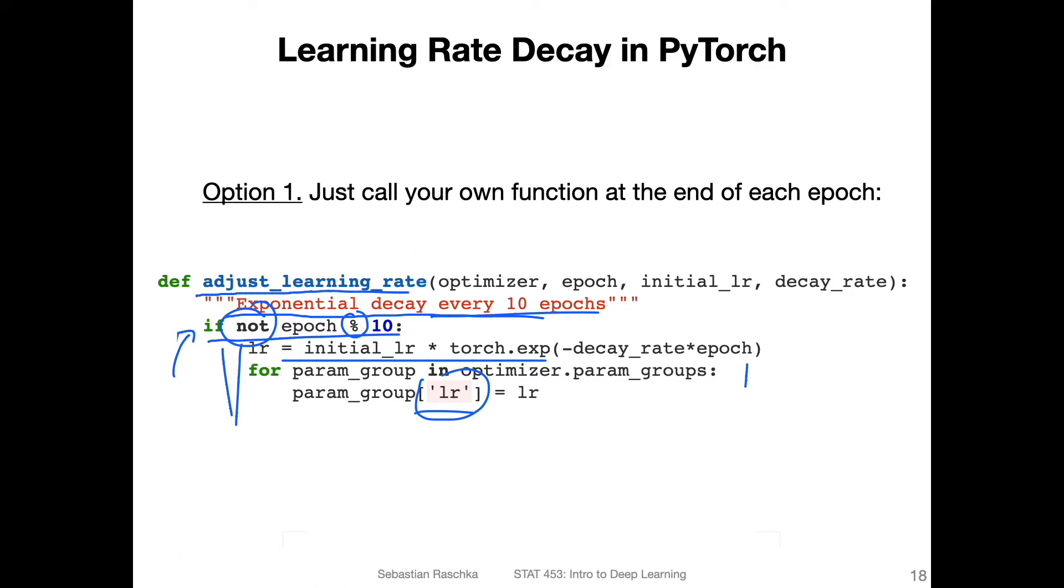Alright, so this would be the tedious way. And then you can call this function after every epoch. So if you have a for loop for epoch in range num_epochs or something like that. And then for each mini batch, essentially, then you do your training, and you would have this function for each epoch, but not for each mini batch.